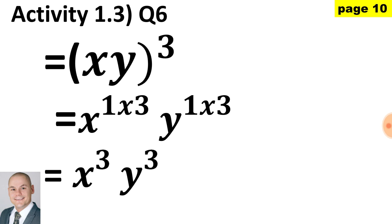Here in question 6, we have x and y raised to the exponent of 3. Where a power is raised to an exponent, we would multiply the exponents. Therefore, we have the base x with 1 multiplied by 3 and the base y with 1 multiplied by 3. Simplified, the answer is x to the 3 multiplied by y to the 3.